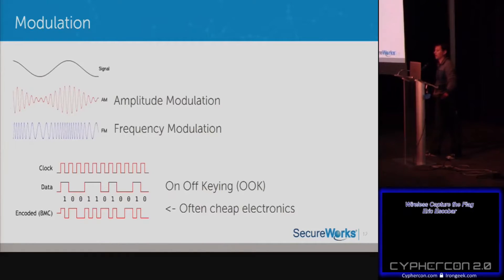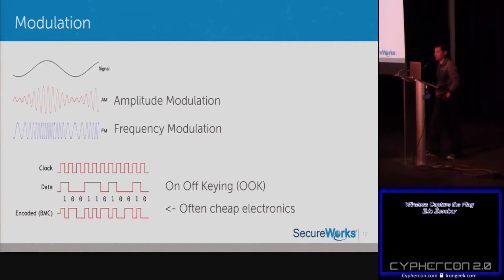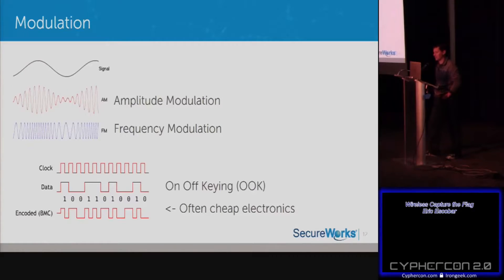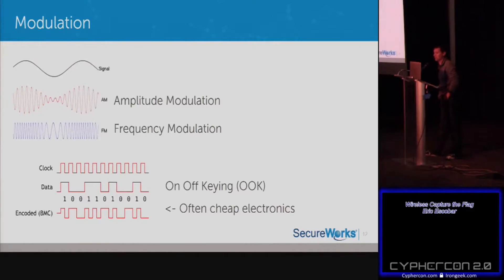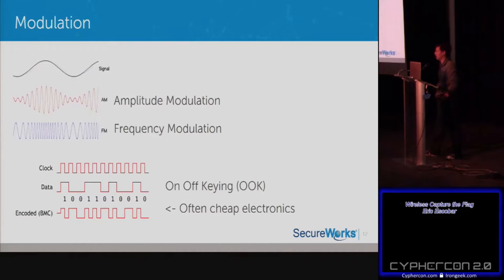This is where you need a bit of physics knowledge. Most people know AM and FM — amplitude modulation makes waves bigger and smaller, while frequency modulation squishes the waves together. The encoding type used here is a form of amplitude modulation called On-Off Keying (OOK). It's a digital way of transmitting data used by a lot of cheap electronics — a high blip is a one, a low blip is a zero, so you're basically transmitting binary.